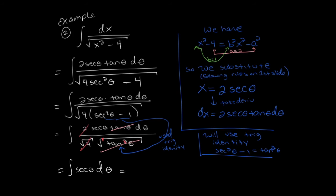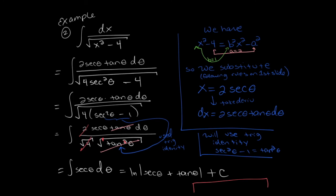Look in your notes for how to integrate secant — you can either have it memorized or derive it step by step. The antiderivative of secant is ln of the absolute value of secant plus tangent. Now, are we done? No — we started with x, converted into thetas to do the integration, and now that we have the antiderivative in terms of theta, we must convert back into x's, just like the previous example.